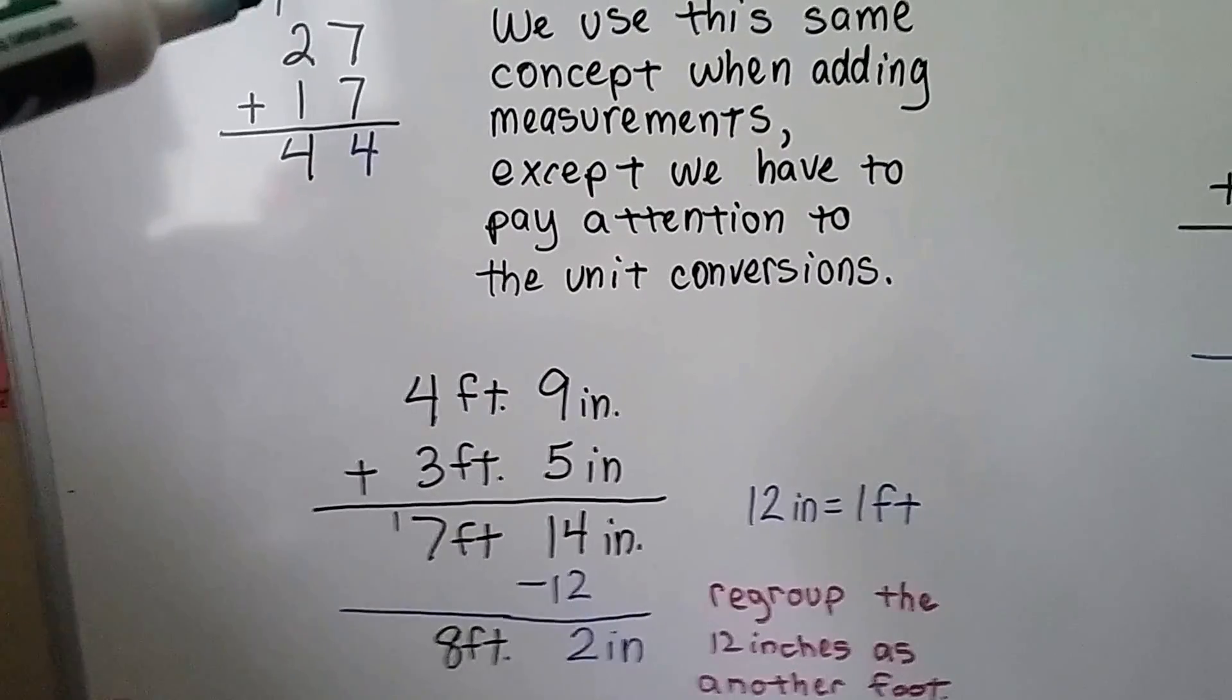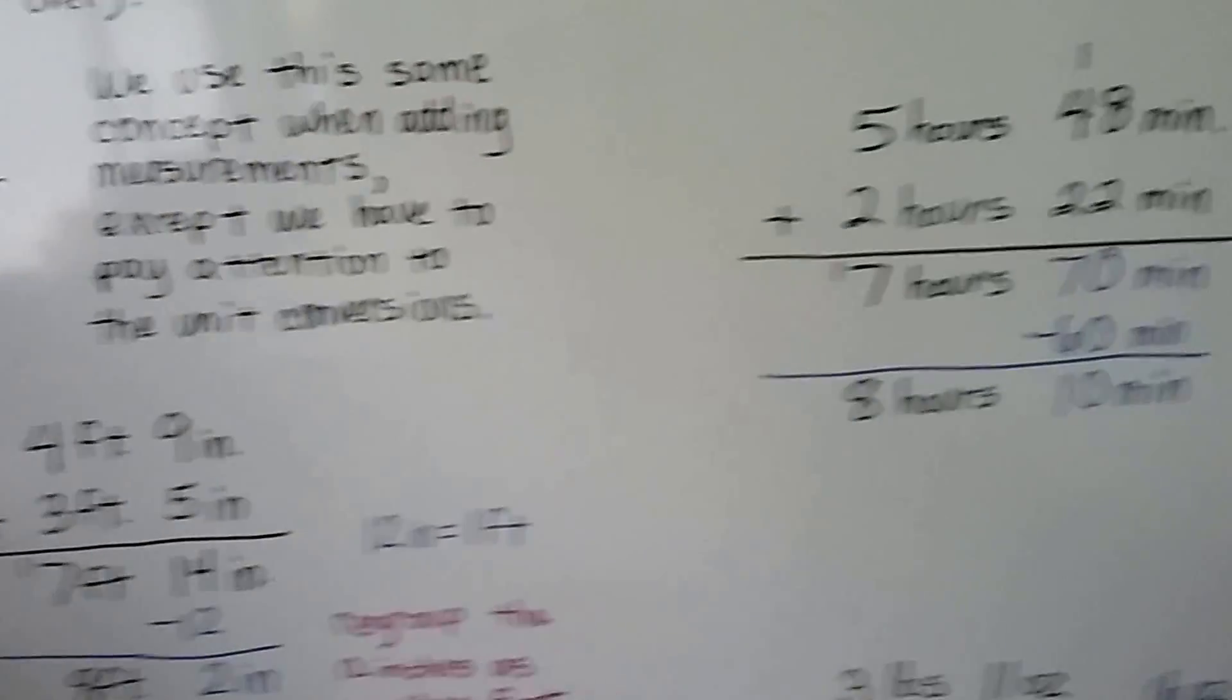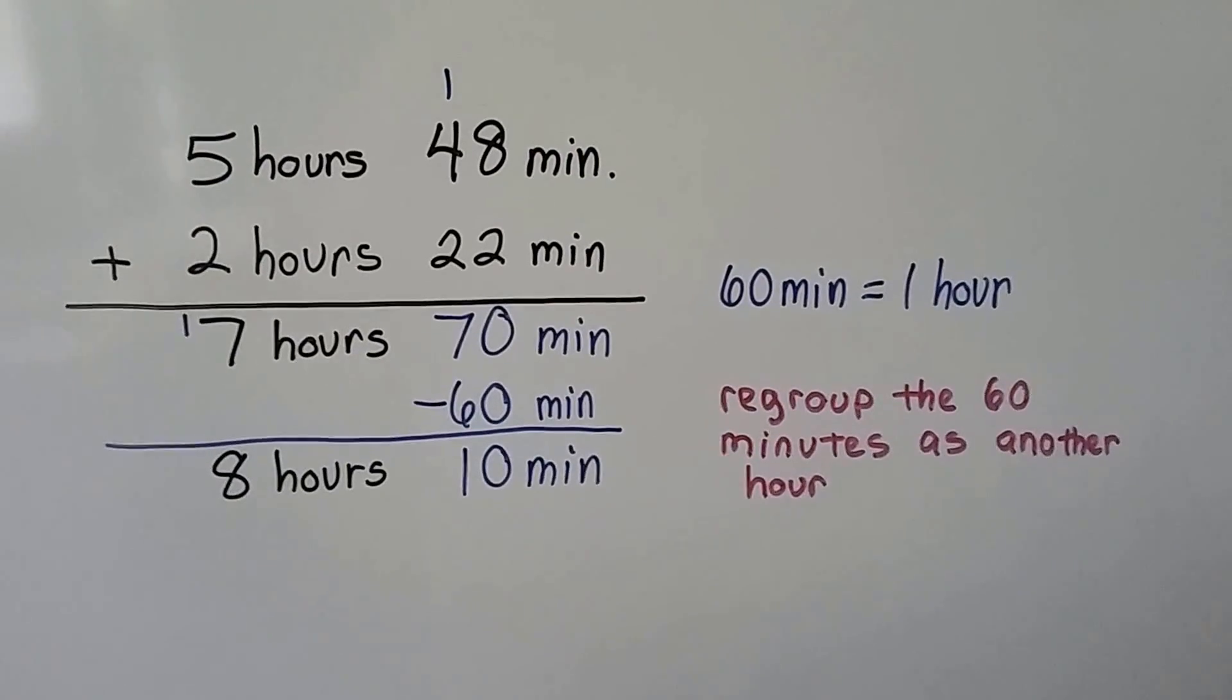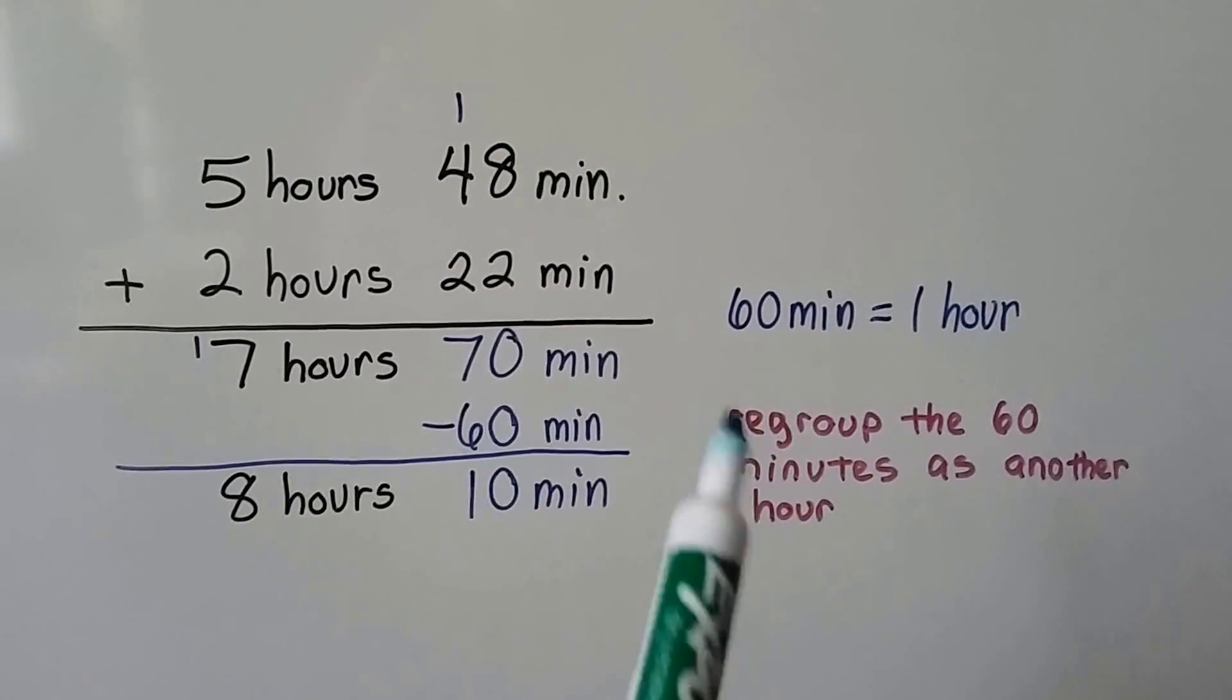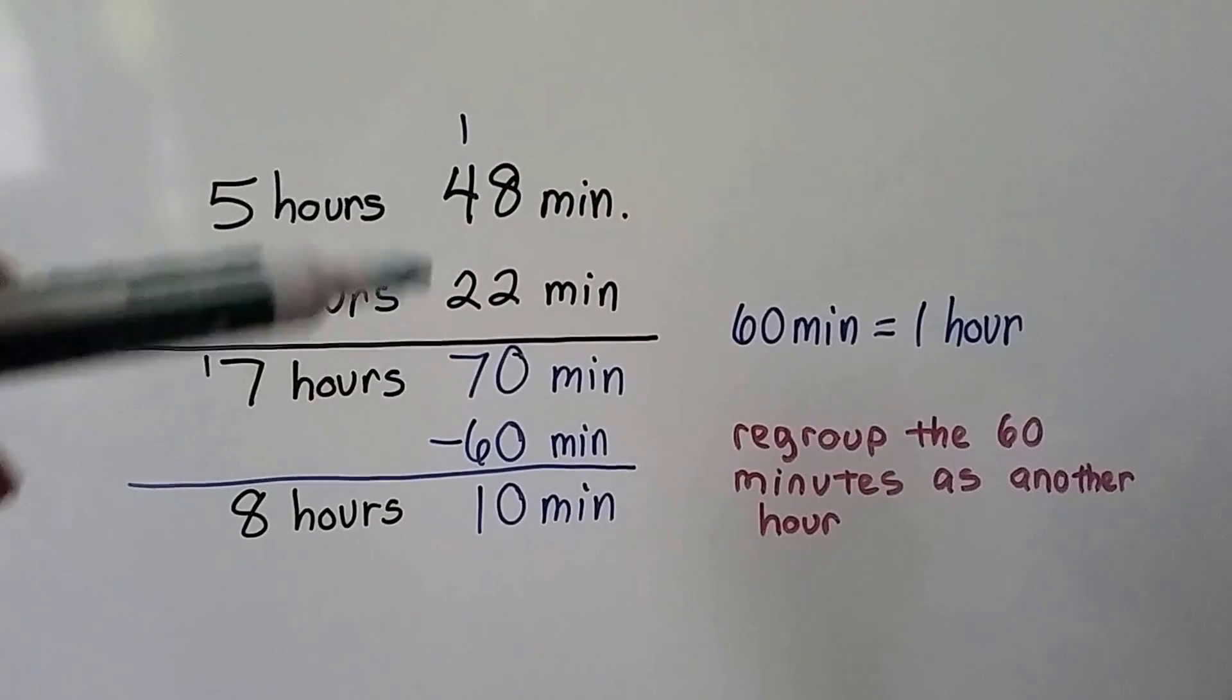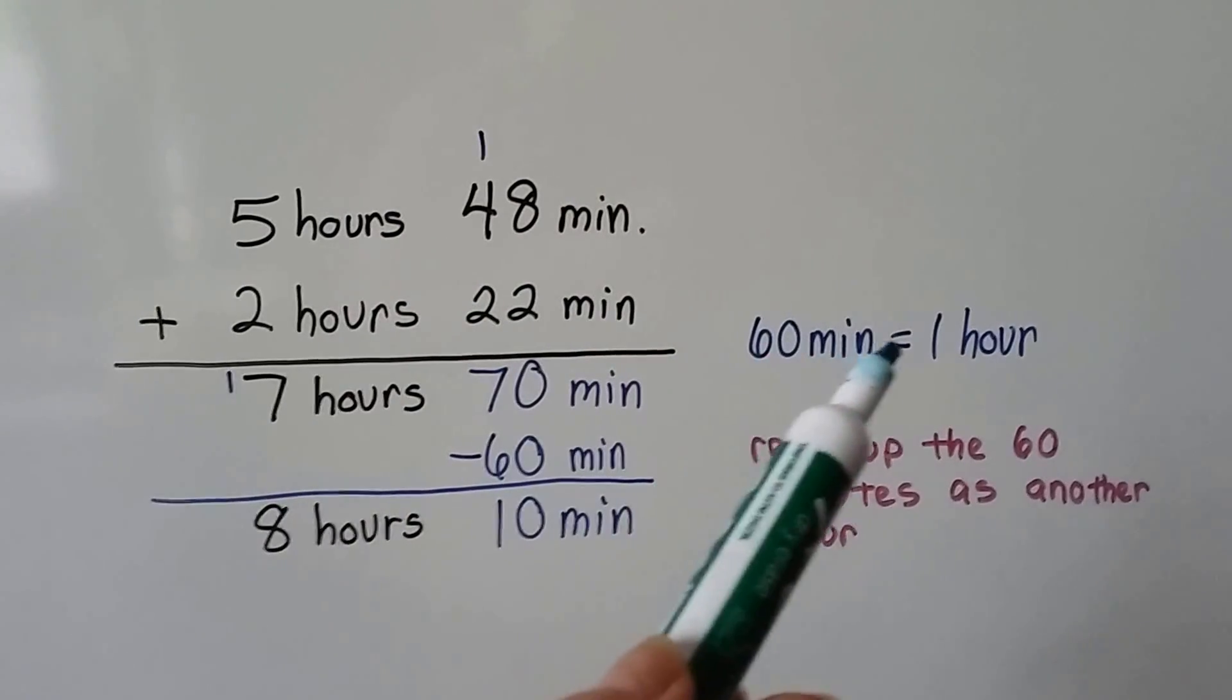Let's try it again. We've got 5 hours and 48 minutes, and we're going to add 2 hours and 22 minutes. We know that 60 minutes is an hour. When we add them, we get 7 hours and we get 70 minutes.